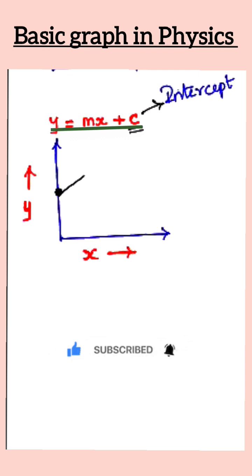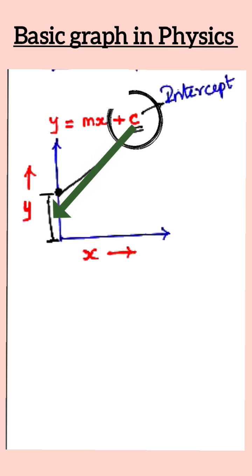Now let me tell you what this intercept, what this c is all about. c is the distance from the origin to the point where the curve starts.